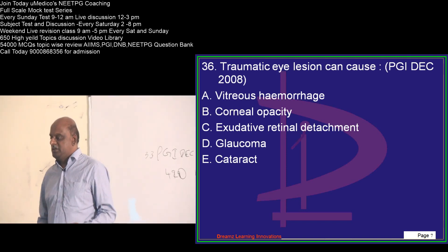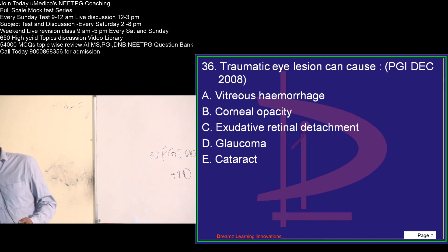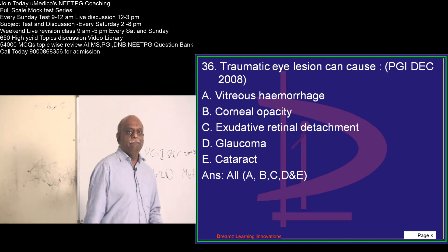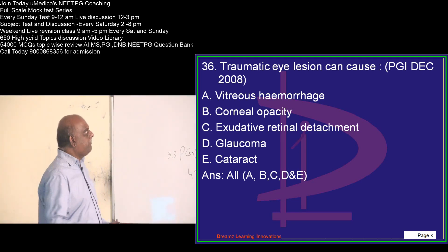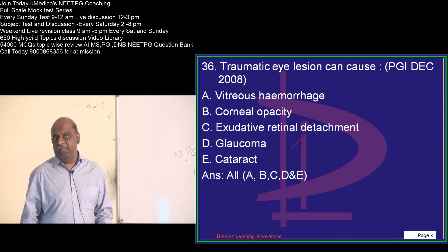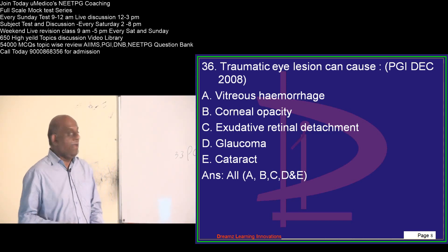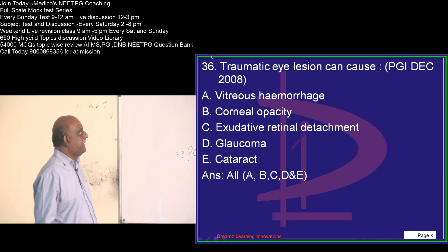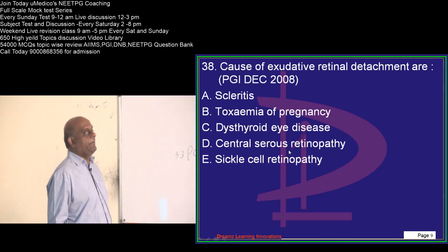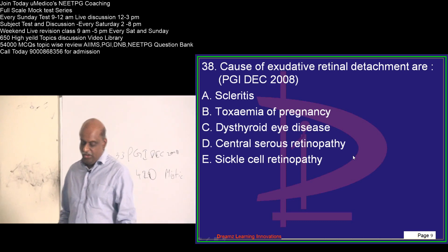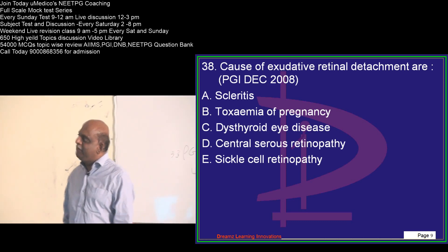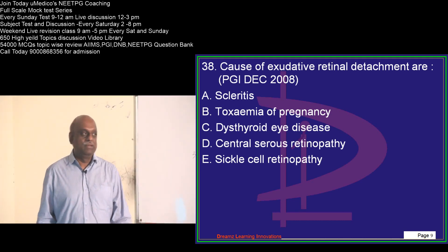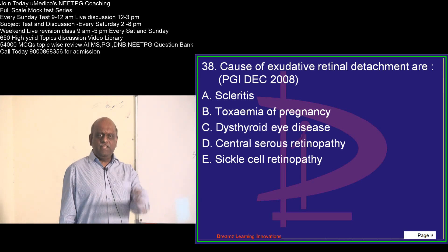Traumatic eye lesions — the outcome is a very important question. Any trauma to the eye can lead to vitreous hemorrhage, corneal opacity, retinal detachment, exudative conditions, glaucoma, or cataract. For PGI, AIIMS, All India, and NEET-PG examiners, retinal detachment is the favorite topic.